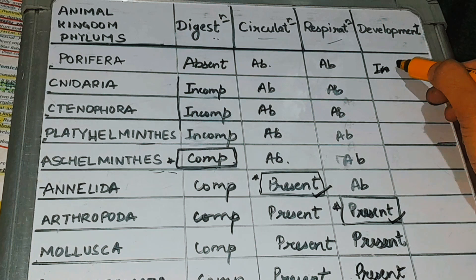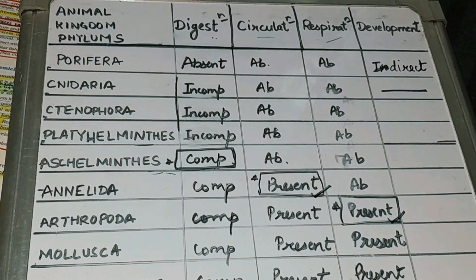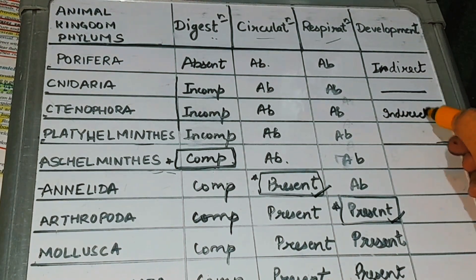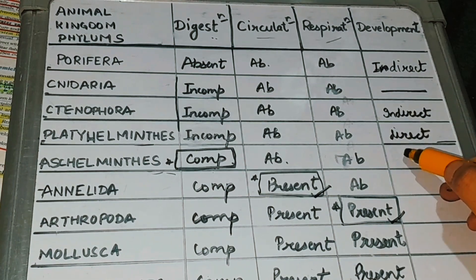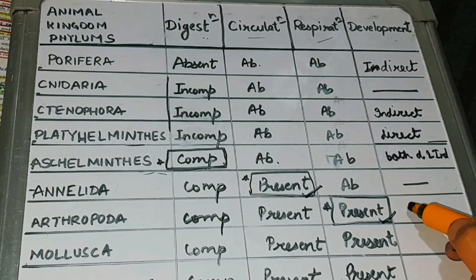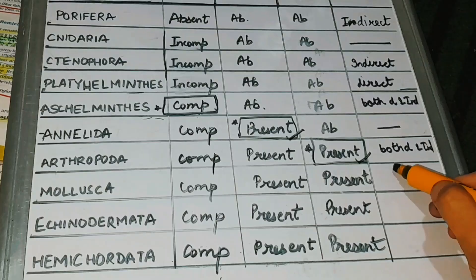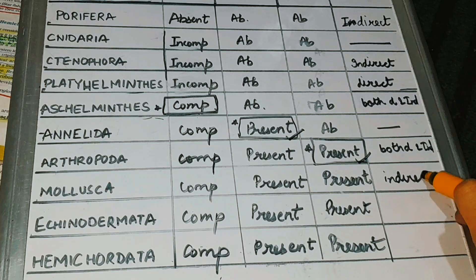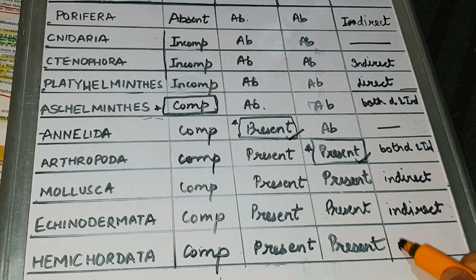Next topic is development. In Porifera, there is indirect development. Development of Nideria is not mentioned. In Tenophora, there is indirect development. In Platyhelminthus, direct development. Escalminthus has both direct and indirect development present. Development of Annelids is not mentioned. In Arthropods, both direct and indirect development is present. Mollusca has indirect development. Echinodermata has indirect development. And Hemicordata will also have indirect development.